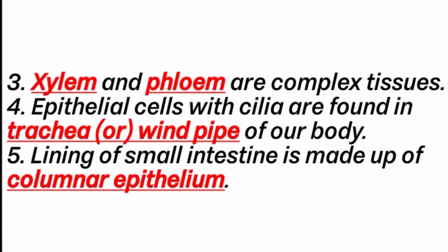Third question: Xylem and dash are complex tissues. Answers are Xylem and Phloem. Fourth question: Epithelial cells with cilia are found in dash of our body. Answer is trachea or windpipe. Fifth question: Lining of small intestine is made up of dash. Answer is columnar epithelium.